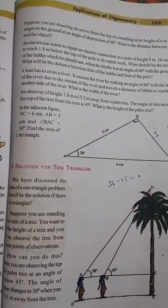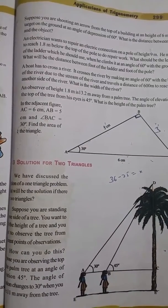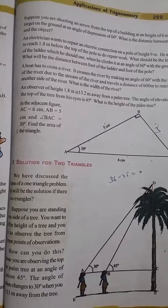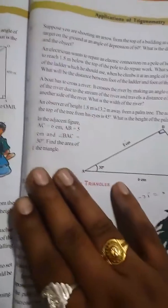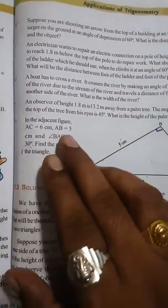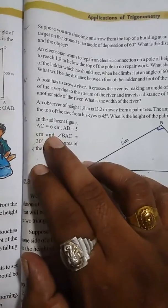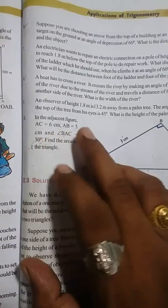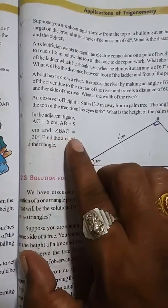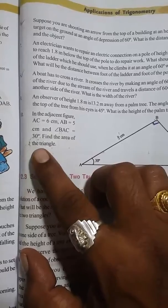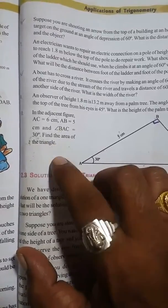Question number 10, page number 299, applications of trigonometry, exercise number 12.1. In the adjacent figure, AC is 6 centimeters, AB is 5 centimeters, and angle BAC is 30 degrees. Find the area of the triangle.